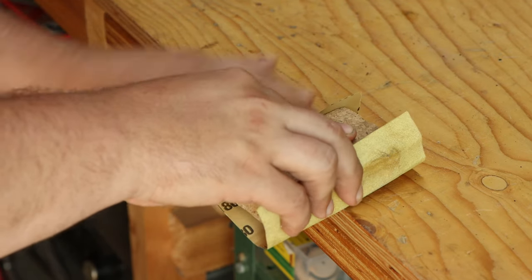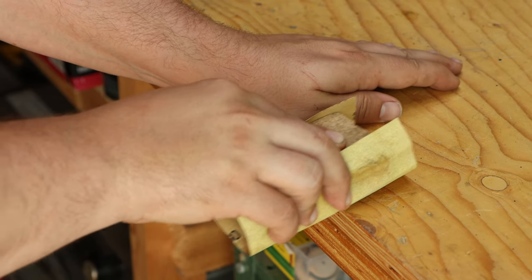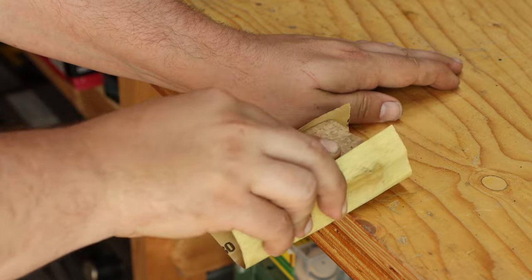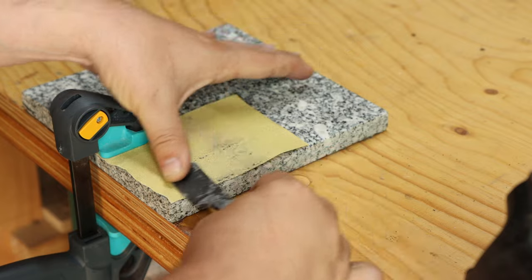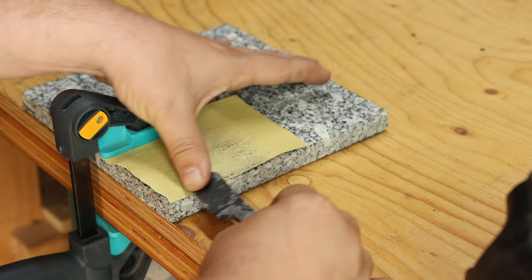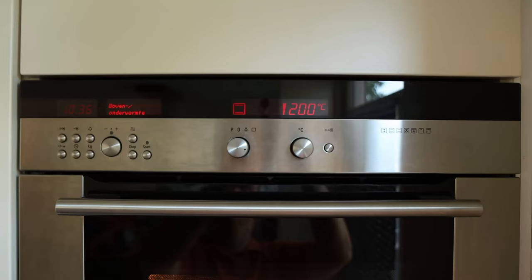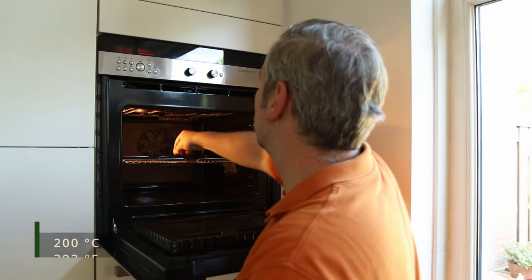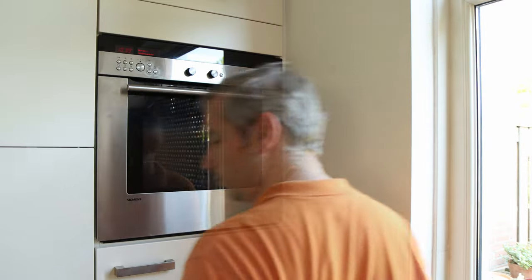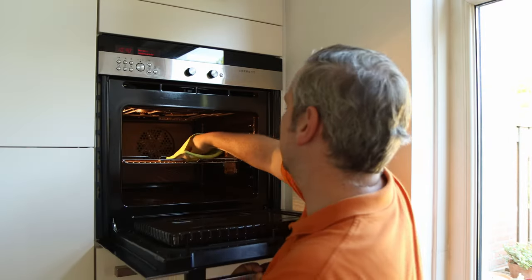The next step is tempering the blade. After quenching it is very brittle and we need to get some toughness back. Before doing that, I sand off a bit of the scale to be able to see the straw color after tempering, so I know I used the correct temperature. For tempering, it goes in the oven at 200 degrees Celsius for two hours. Then I let it cool down and put it back in the oven for another two hours at 200 degrees Celsius.